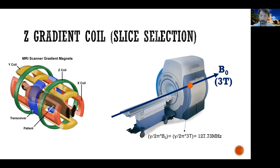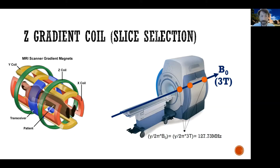At three Tesla, a proton would be spinning at 127.73 megahertz. A proton at any other location would also be resonating at 127.73 megahertz — all these protons are resonating at the same frequency. So if I inject a radio frequency pulse at 127.73, I would be exciting all of these protons. What I want is a way to only excite the protons at one specific level — here, or here, or here. To do that, we use a Z gradient coil.